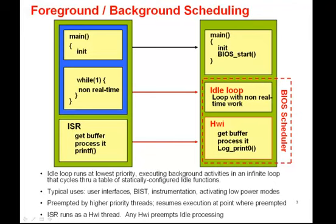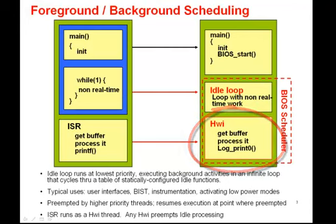We previously talked about interrupt processing being done in a generic interrupt service routine, but now instead of running plain interrupt service routines, SysBIOS applications run those threads from what is called a BIOS Hardware Interrupt, or a Hwi. These Hwis will preempt the idle thread in the same way that a foreground process preempts a background process.